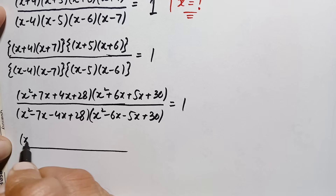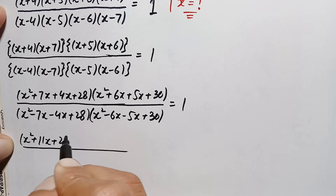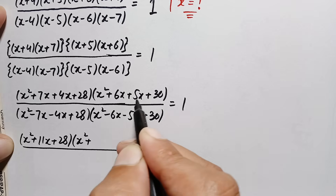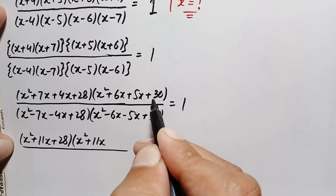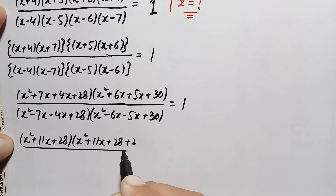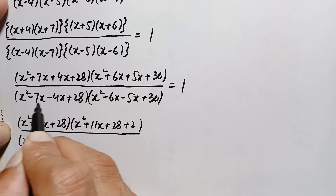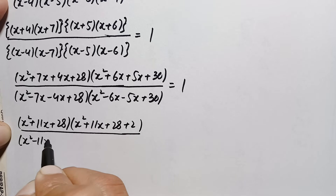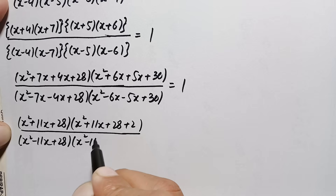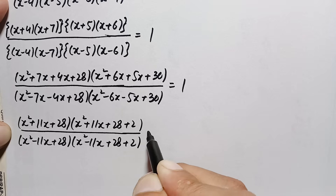Simplifying the expressions in the numerator and denominator: the numerator becomes (x² + 11x + 28) times (x² + 11x + 30), where 30 is written as 28 plus 2. The denominator becomes (x² - 11x + 28) times (x² - 11x + 30), where again 30 is written as 28 plus 2, all equal to 1.